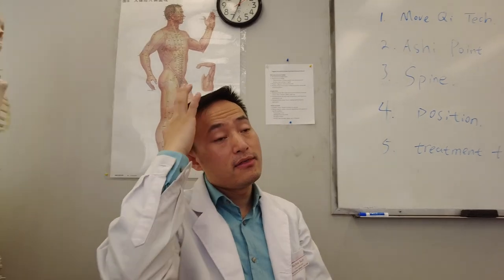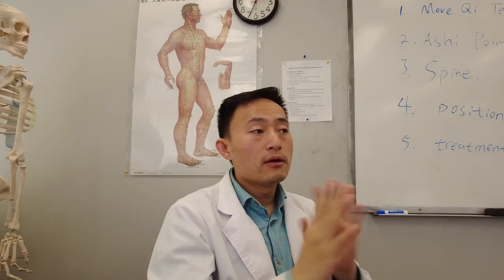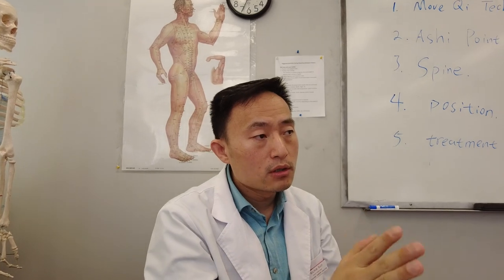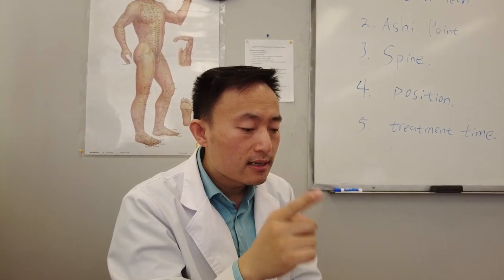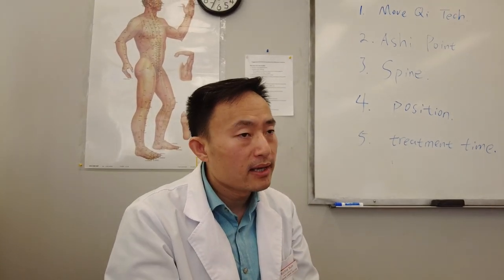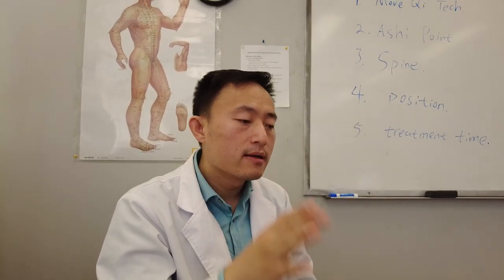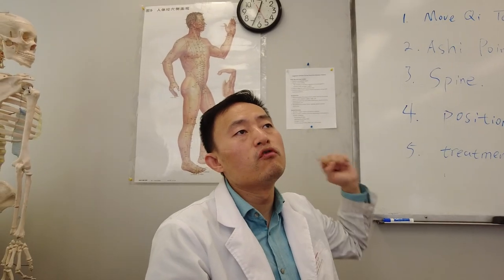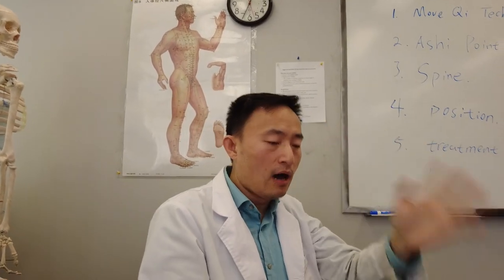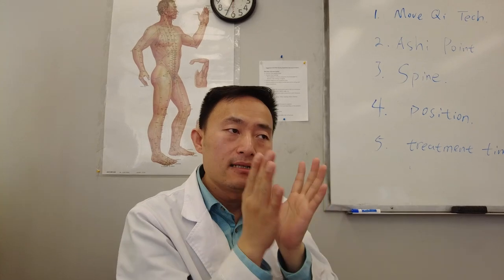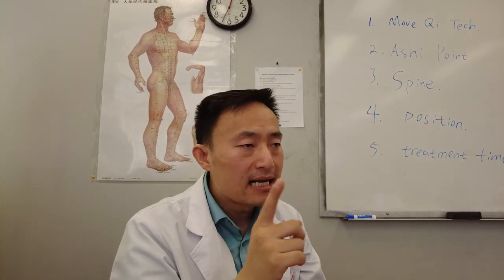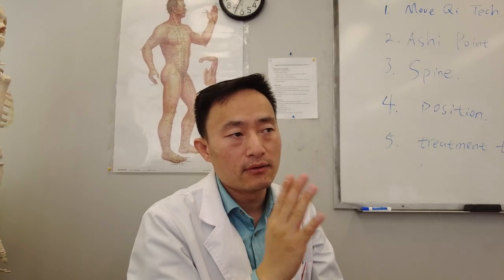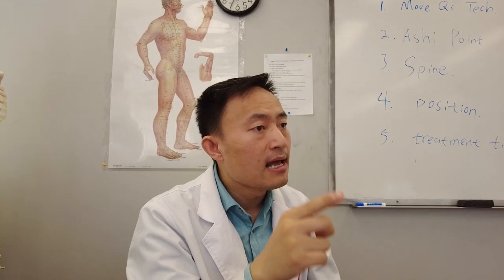For cases with constant pain or pain triggered at a certain angle, we use ashi points and the pain reduces right away — that tells us the treatment is working. We can then try local points. Going forward, whenever you see constant pain or pain triggered by a specific movement, use the balance method to reduce symptoms. But remember: the balance method is not a solution for everything.